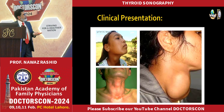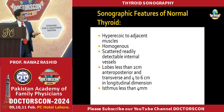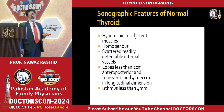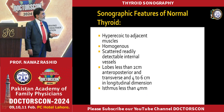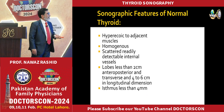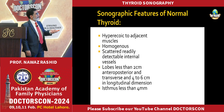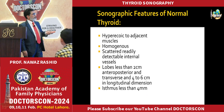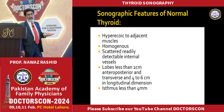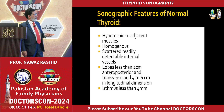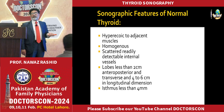We have to see that the sonographic features are normal in the thyroid. The thyroid is hyperechoic to the surrounding muscles and will be homogeneous. The lobes are less than two centimeters.